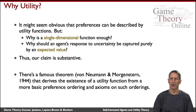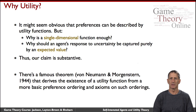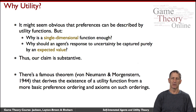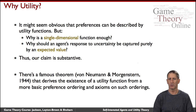For example, you might have some level of wealth and some degree of health, and for a certain level of each one you'll have some notion of well-being. But is it appropriate to put the two together and have a single scale? You might question that.